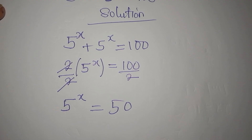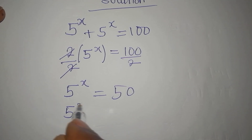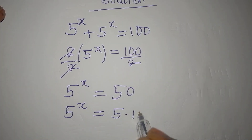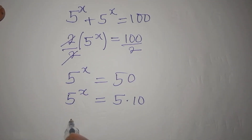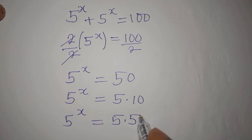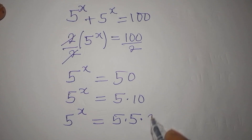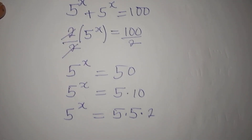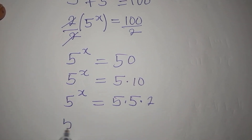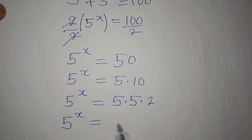Can we express 50 in the form of a power of 5? The answer is no, because 50 can only be 5 multiplied by 10. We can still simplify: 5 to the power of x equals 5 multiplied by 5 multiplied by 2. We can write this in index form as 5 to the power of x equals 5 squared multiplied by 2.